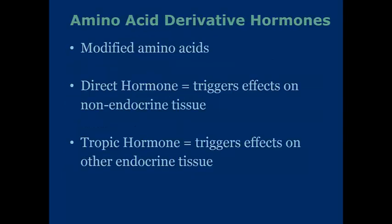Amino acid derivative hormones are modified amino acids, so they're slightly different than the peptide hormones discussed earlier. There are two types in particular: direct hormones, which trigger effects in non-endocrine tissues, and tropic hormones, which trigger effects in other endocrine tissues. These are generally derived from one or two amino acids with a couple of additional modifications. An example is thyroid hormones, which are made from tyrosine with the addition of a couple of iodines.